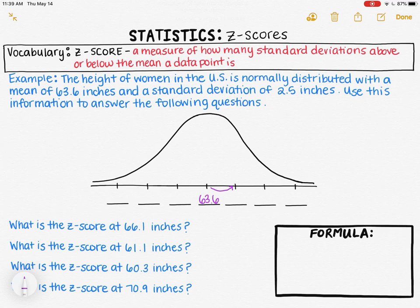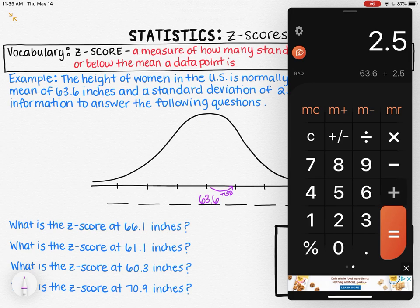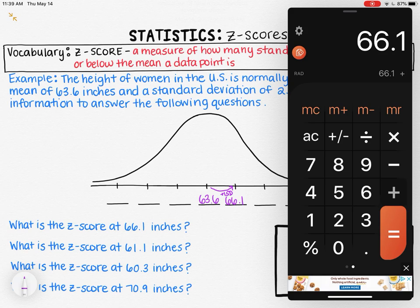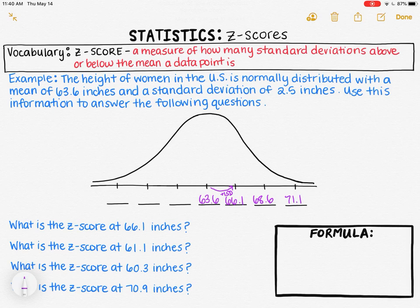We can start by figuring out the height that is one tick mark to the right by adding one standard deviation to our mean. Taking 63.6 and adding 2.5 gives a value of 66.1 inches — that's one standard deviation to the right. Continuing, 66.1 plus 2.5 gives 68.6, which is two standard deviations to the right. Then 68.6 plus 2.5 gives us 71.1 as the height that is three standard deviations to the right.